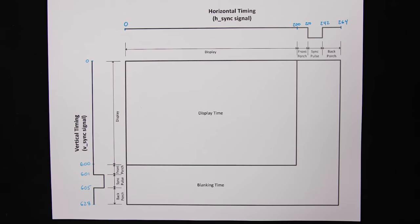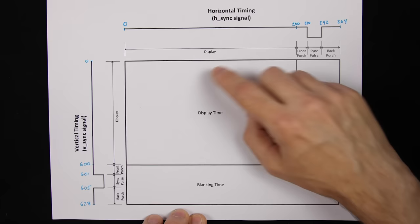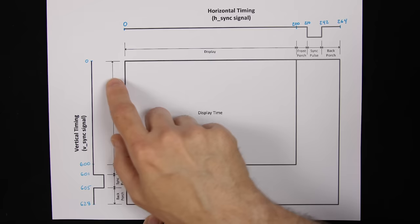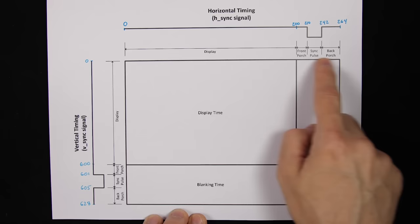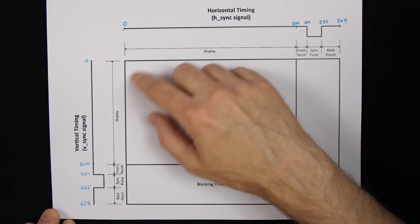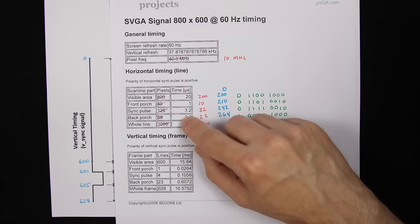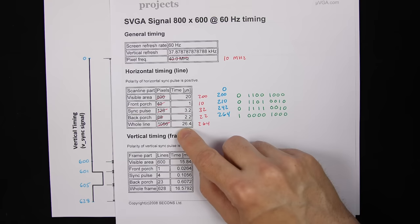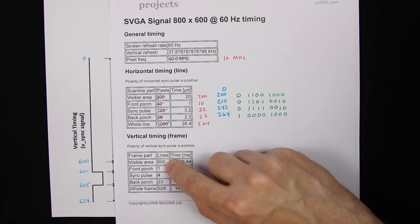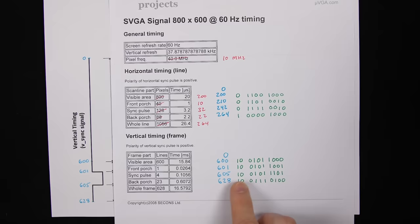Next we need to generate the vertical sync signal. It works pretty much the same way — instead of counting pixels across the screen, we count scan lines down the screen. Every time we go through 264 pixels across, we count one line down. We need to know when we're between 0 and 600 to display content, and between 601 and 605 to output the vertical sync signal. With our 10 megahertz clock generating horizontal lines correctly at 26.4 microseconds each, the vertical timing will work out as long as we count lines correctly — counting up to 628 and detecting 600, 601, 605, and 628.